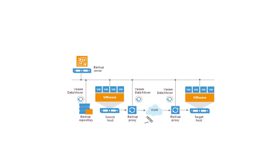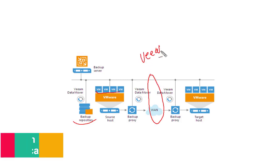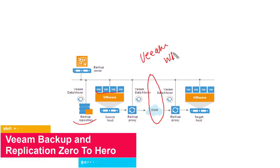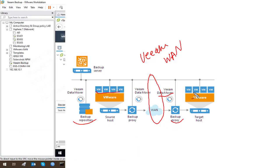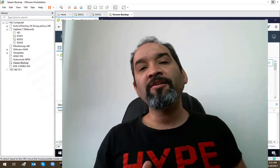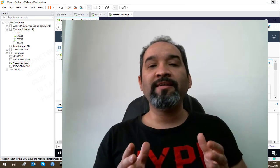With an on-host backup proxy we can transfer a virtual machine using Veeam Data Mover throughout the WAN connection, and here we'll have the Veeam WAN accelerator. By using Veeam Data Mover on the target and an off-host backup proxy, we can move this virtual machine to the target host. This is how Veeam off-site replication works in a real environment.